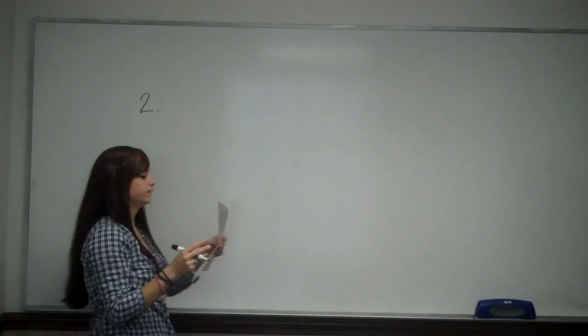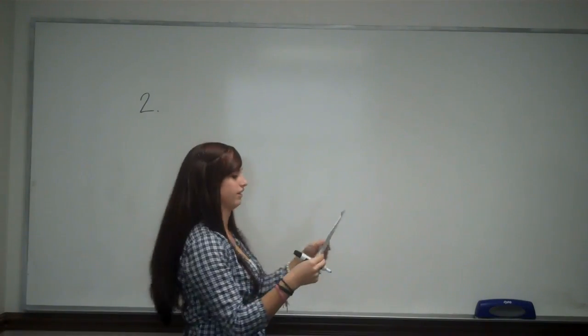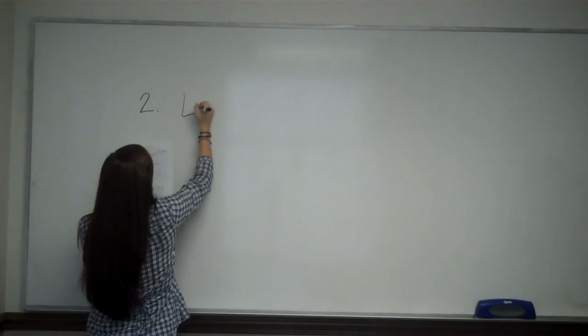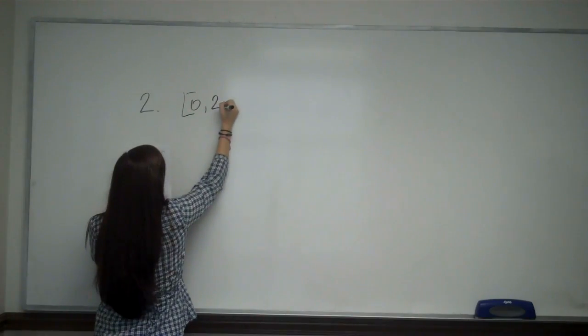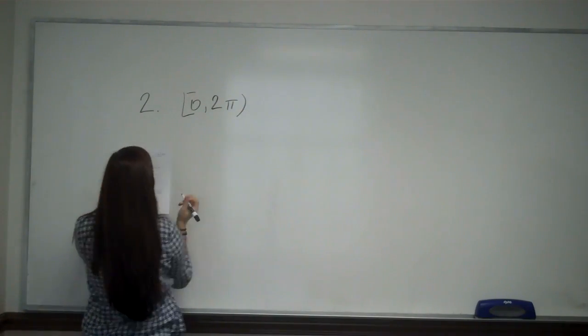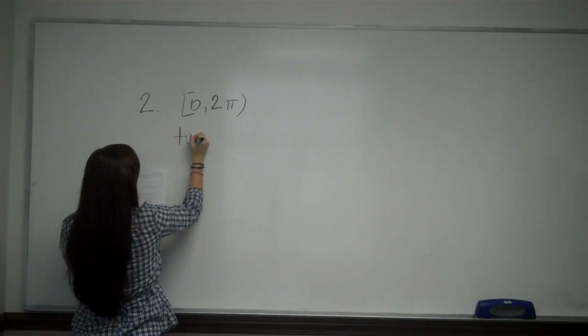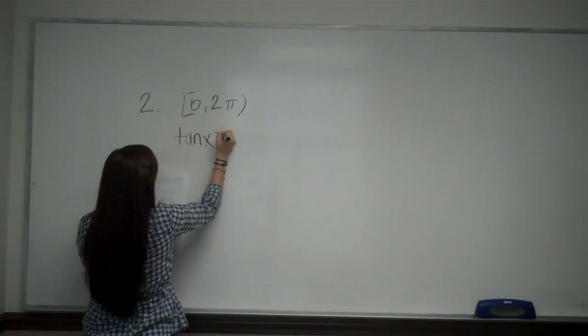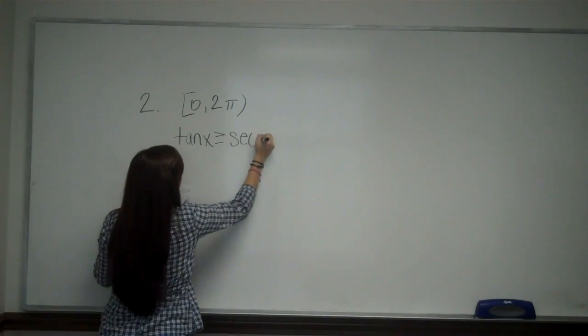I'm going to do problem number two. Problem number two says find each value of x on the interval from zero to two pi for which tangent x is greater than or equal to secant x. So we have the interval from zero to two pi and they want to know when tangent x is greater than or equal to secant x.